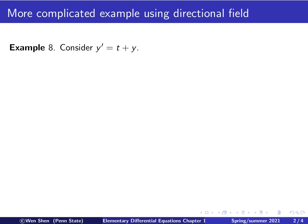In this video, we will go through a more complicated example for using a directional field. The example we take is the following: y prime equals t plus y. So for the first time, we see that the right-hand side contains the term t, and that makes the situation very complicated.